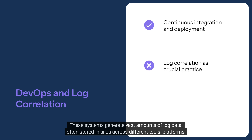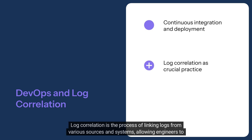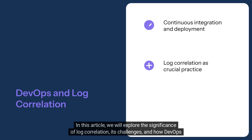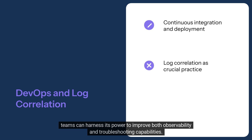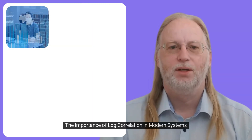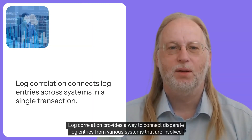Log correlation is the process of linking logs from various sources and systems, allowing engineers to piece together the story behind an incident, detect issues earlier, and optimize system performance. In this article, we will explore the significance of log correlation, its challenges, and how DevOps teams can harness its power to improve both observability and troubleshooting capabilities.